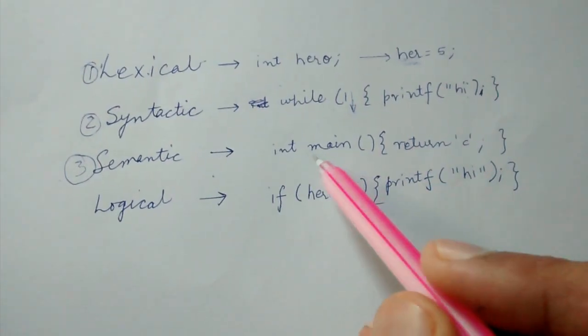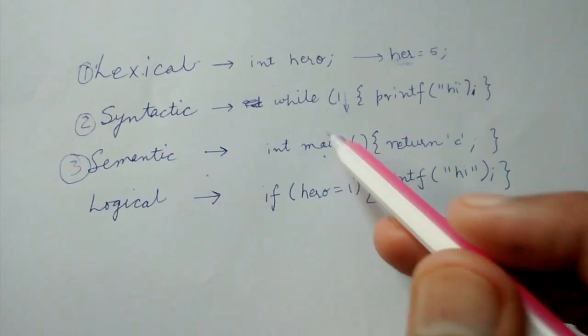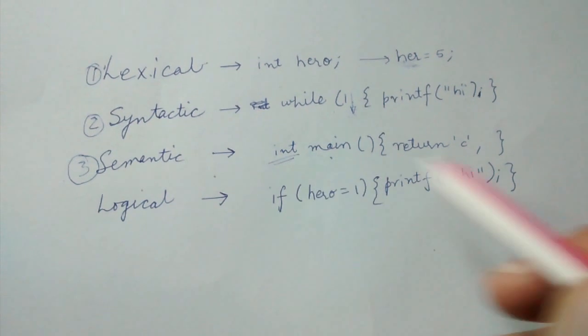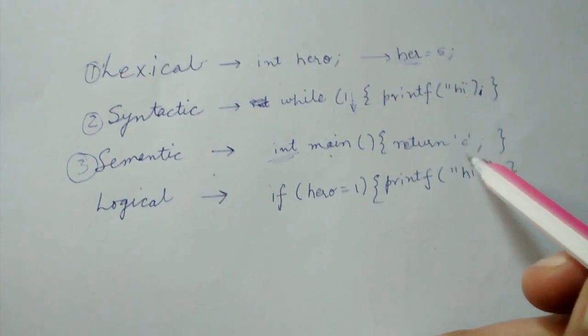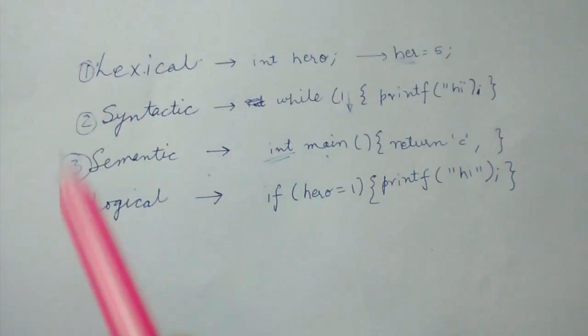The main function is supposed to return an integer type but it is returning a character instead. So those type of errors are included in semantic errors.